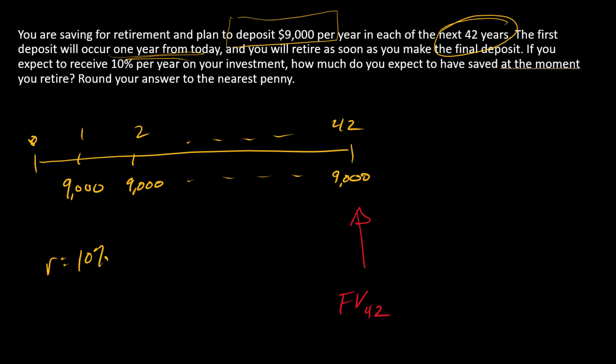If we just glance at this timeline, what we see is we have an annuity. The first payment is at time 1 and the final payment is at time 42, so this is a 42-period annuity. Everything is set up in the ordinary fashion—the first payment is one period after today—so all of our standard formulas and our out-of-the-box financial calculator tools will work.